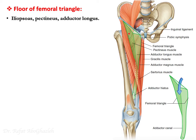Regarding the floor of the femoral triangle, you have the iliopsoas muscle — the iliacus and psoas major together — forming the lateral part of the floor. Medial to it is the pectineus muscle, which attaches to the superior pubis and the pectineal line. Medial to the pectineus is the adductor longus muscle. These three muscles together form the floor of the femoral triangle.